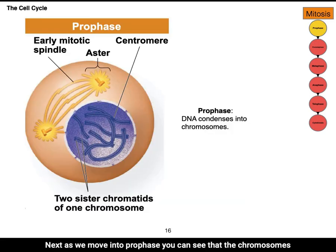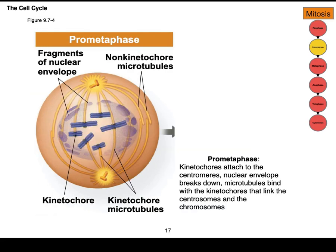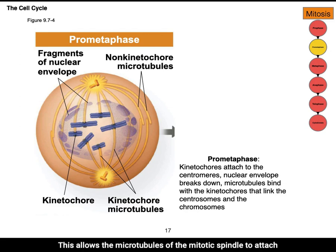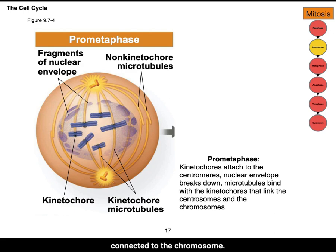As we move into prophase, the chromosomes have condensed, forming two sister chromatids connected by a centromere. The centrosomes are starting to move towards opposite poles of the cell, forming the mitotic spindle. During prometaphase, the nuclear envelope breaks down, allowing the microtubules of the mitotic spindle to attach to the kinetochore of the centromere. The microtubule is connected to the centrosome and therefore connected to the chromosome.